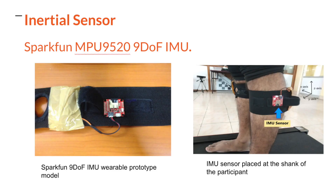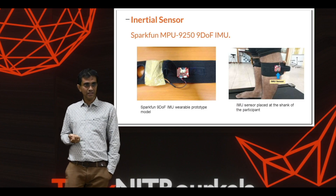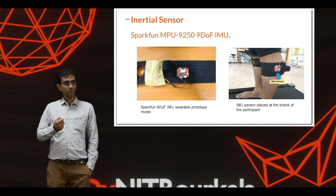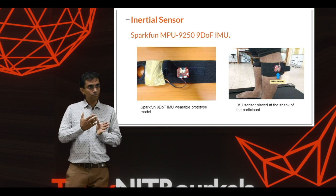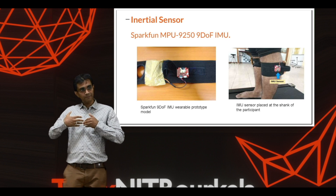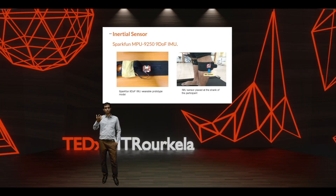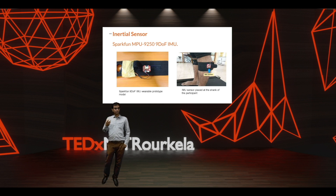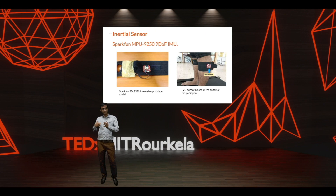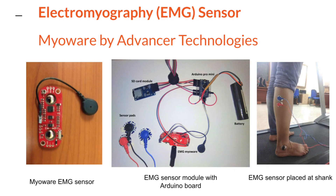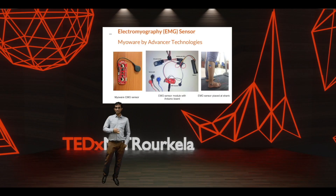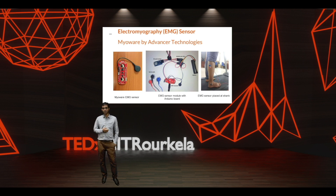Next are inertial sensors — the IMU sensor — which give information about the inertia of the moving body. Following this approach, we have developed a prototype to capture the inertia of the moving body and capture the gait pattern. We also use EMG sensors, which give the muscle activation pattern. We are using the Myo armband kind of advanced technology to easily capture the muscle activation pattern.